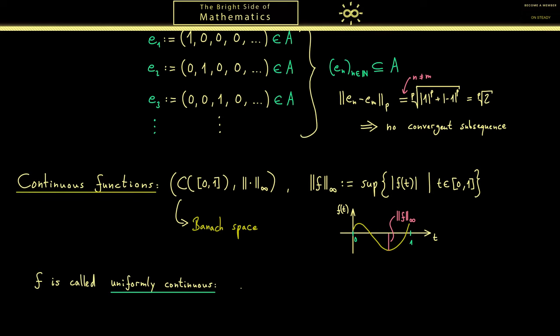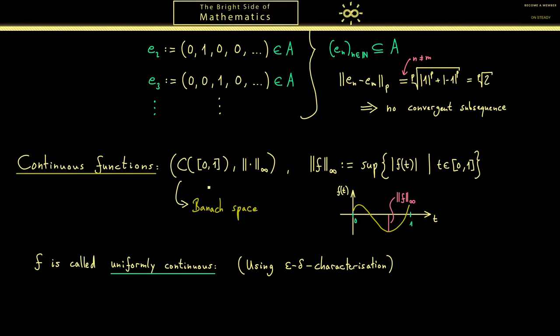Another important property you might know from these continuous functions is that they are also uniformly continuous. Since it's not the simplest definition I want to write it down here. And we will use the epsilon delta characterization for continuity. This is something you should know at least for common functions as we have it here. To make it easier to see what really happens I want to use the quantifiers for all and there exists.